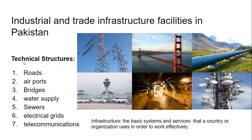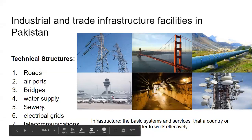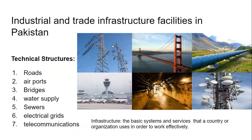Now let's talk about the technical structures that we have. We have roads, airports, and bridges — these three infrastructures are important for transport to take place. Then we have water supply, which ensures that different parts of Pakistan get water, and sewers to ensure proper disposal of waste. We also have electrical grids to ensure a proper supply of electricity, and telecommunication, which helps connect people to one another across different parts of the country.